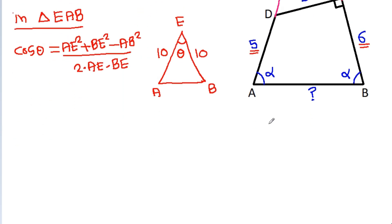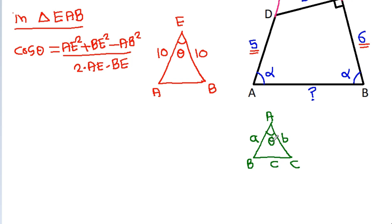Because in a triangle with sides A, B, C and the angle theta opposite side C, the law of cosines gives: cos theta equals A squared plus B squared minus C squared, divided by 2AB.